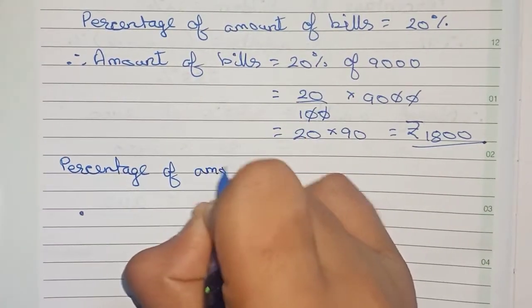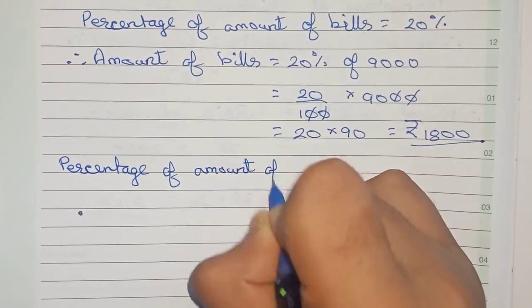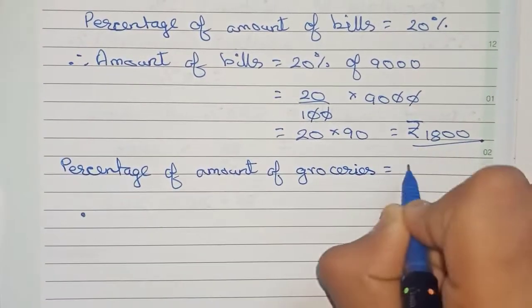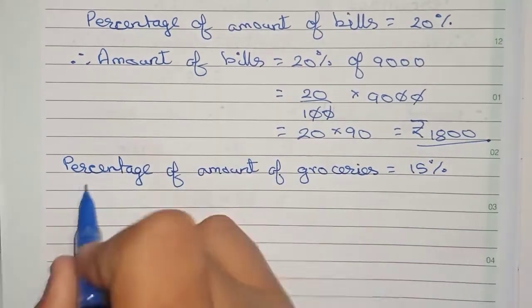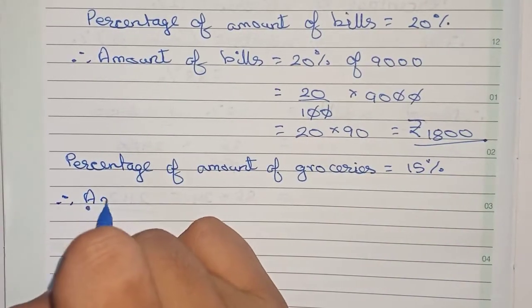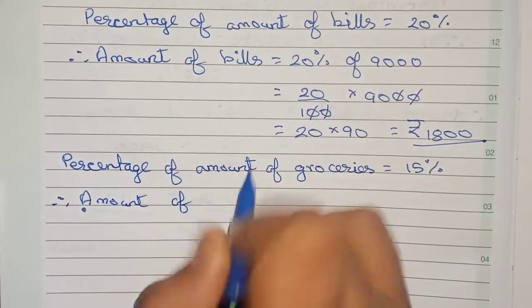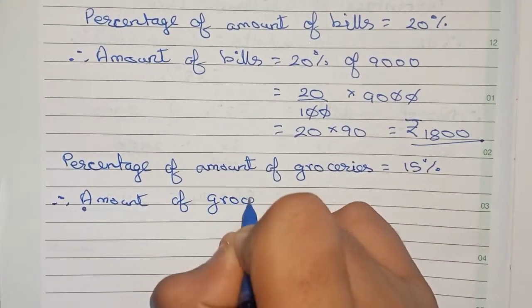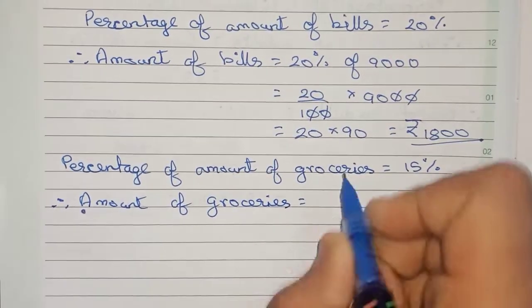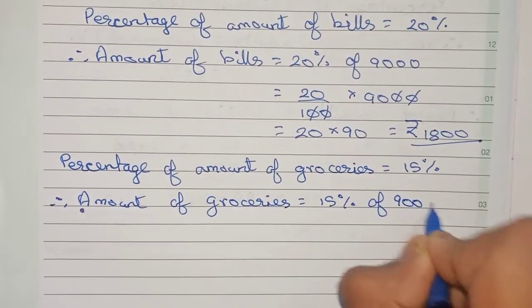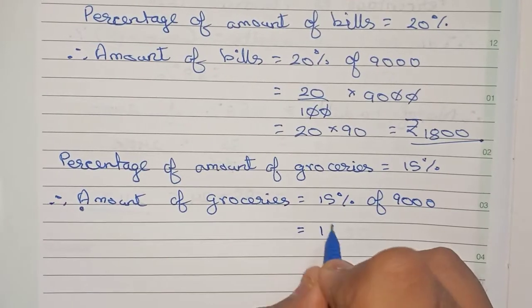Therefore, now the amount of groceries, the amount of groceries, so that will be 15% of 9,000. Similarly, so now 15% we write as 15 by 100.